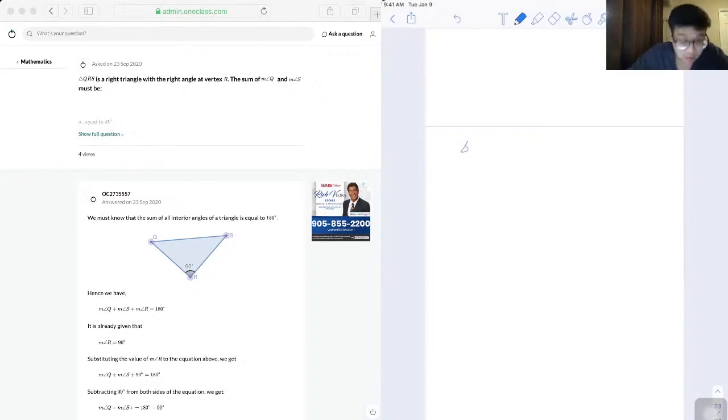Triangle QRS is a right triangle with the right angle at vertex R, and the sum of angle Q and angle S must be...